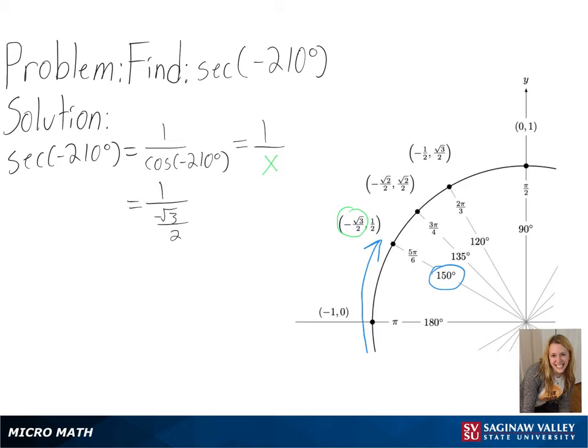So we will get 1 over negative square root of 3 over 2, and after multiplying by the reciprocal and simplifying, we will get negative 2 times the square root of 3 over 3 as our final answer.